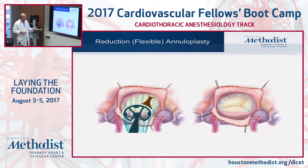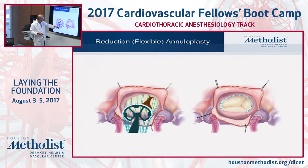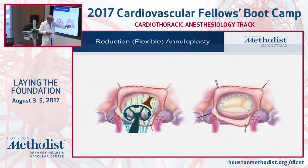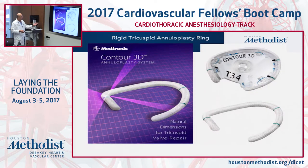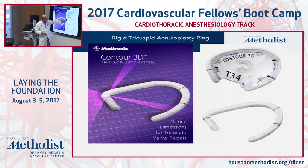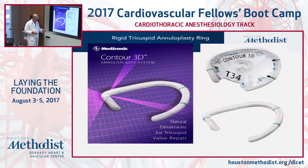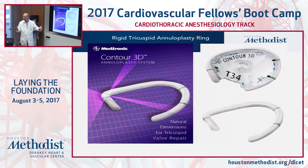A reduction annuloplasty can also be performed using a Cosgrove-Edwards flexible band, which was designed for the mitral valve and is simply turned upside down for tricuspid use. It doesn't provide support to the septal leaflet portion, and long-term results aren't as good as with a rigid band — though they're better than a simple suture annuloplasty. One of the rigid bands designed specifically for the tricuspid annulus has a built-in gap so sutures are not placed in the AV node region, which is also the area least at risk for dilatation since it's fixed to the central fibrous body.